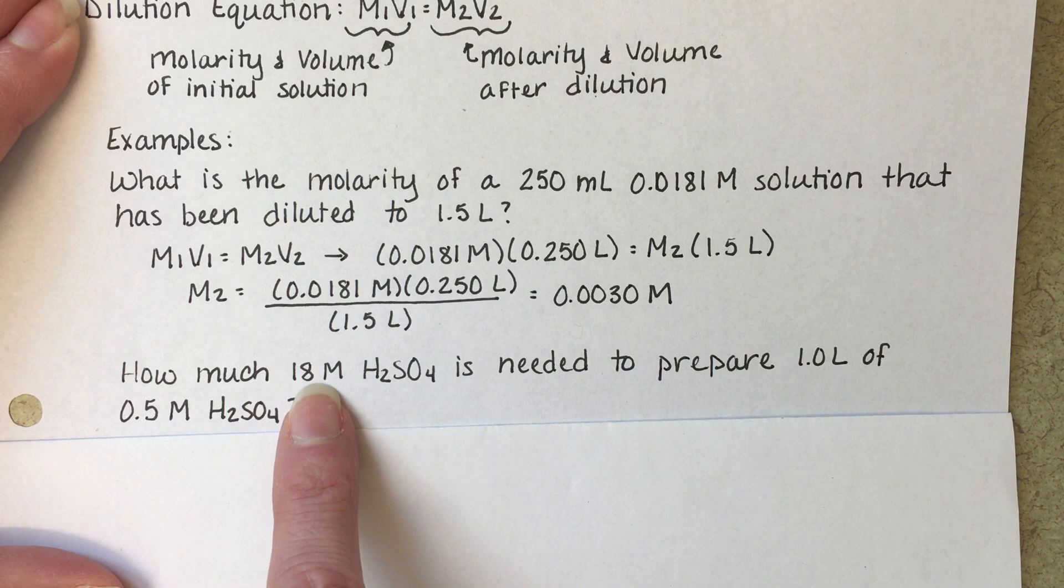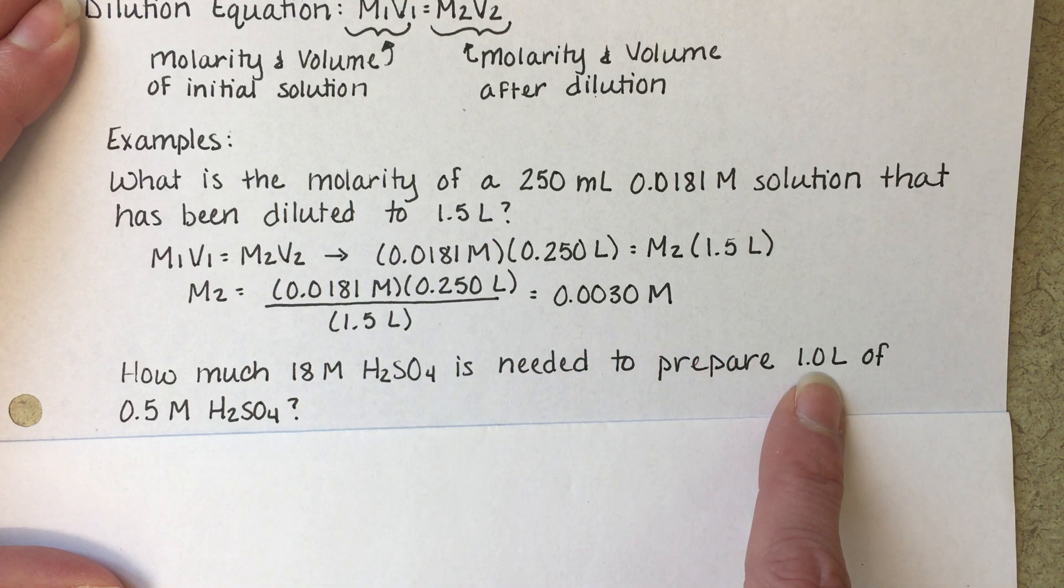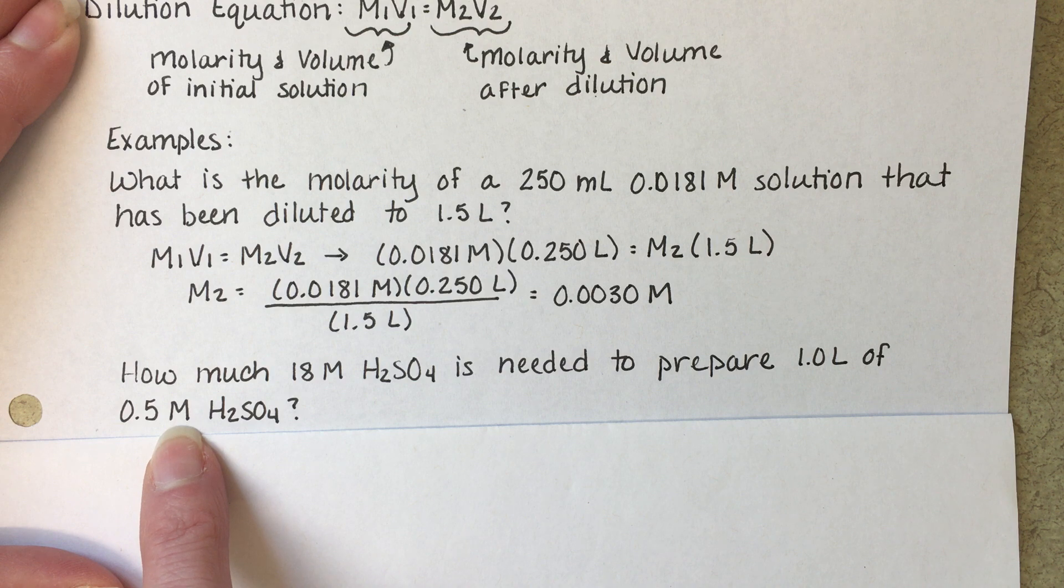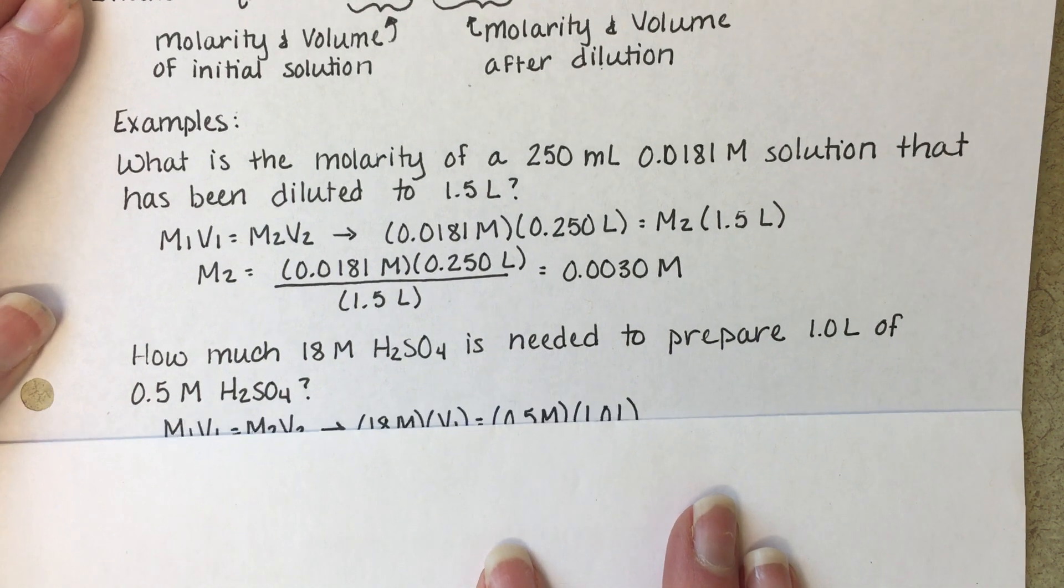So this is our initial molarity. This is our final volume, V2. This is our final molarity, M2. And we're trying to solve for V1 in this problem.